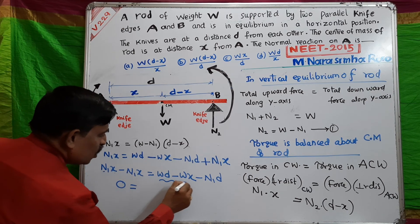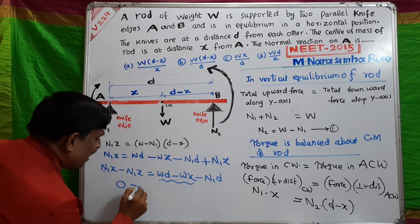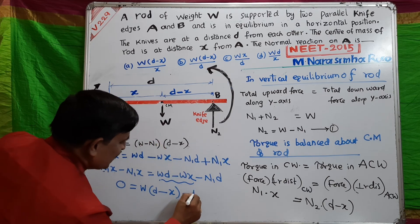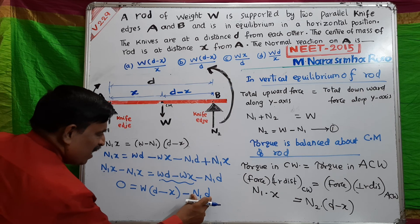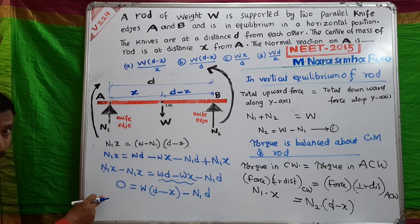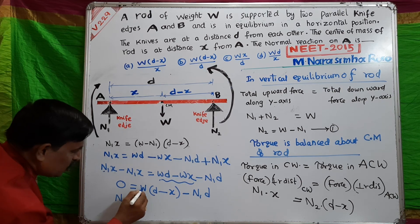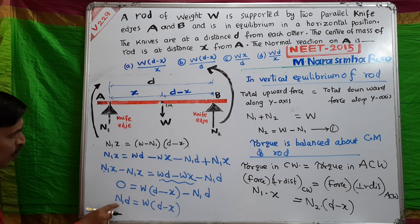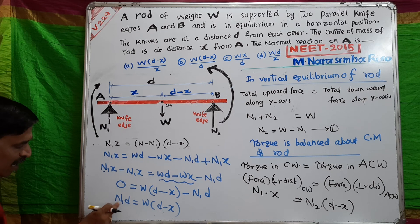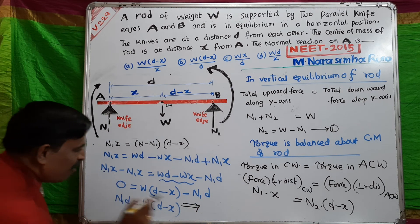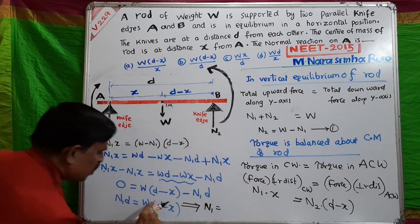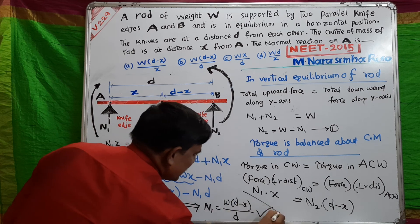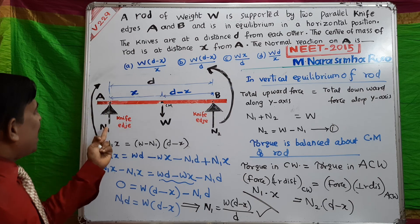Rearranging: N1·D equals W·D minus W·X, which factors as W(D minus X). Dividing both sides by D, N1 equals W(D minus X) divided by D. This is the normal reaction acting at point A.